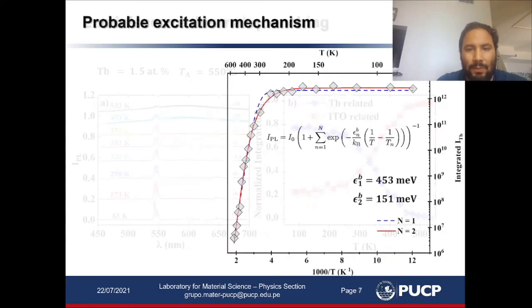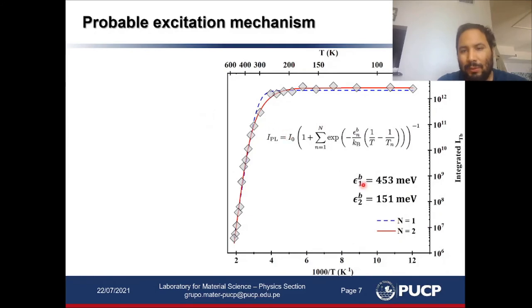From this data, we perform an Arrhenius plot and we are able to identify two activation energies associated to the thermal quenching process.